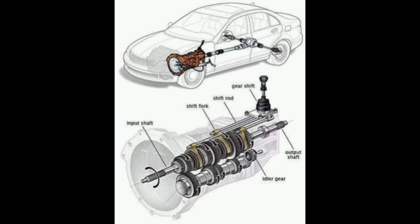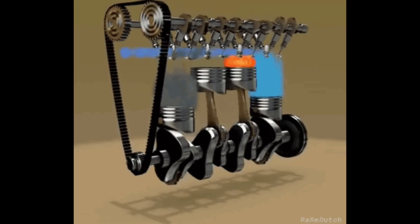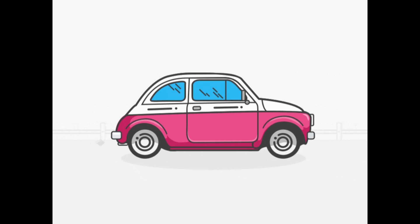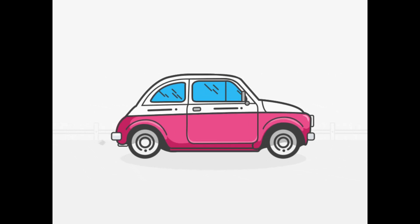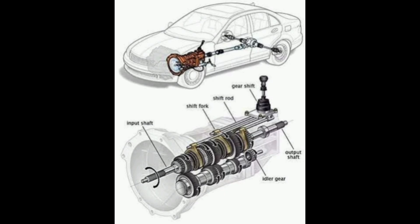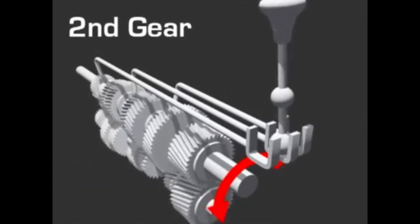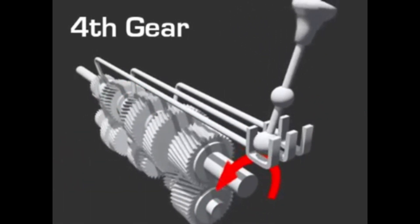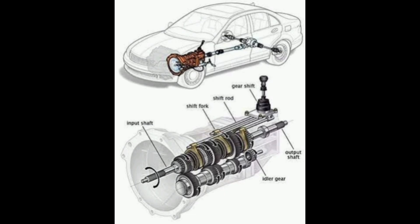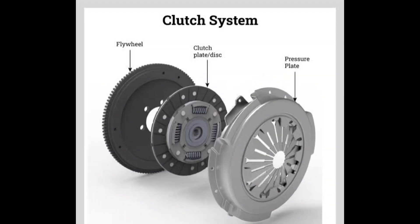The transmission system in an automobile serves as the mechanism for transferring the engine's power to the road wheels, propelling the vehicle forward. In this process, the engine generates power to drive the wheels, necessitating a connection between the engine and the transmission system. A seamless engagement and disengagement mechanism is crucial to prevent damage to the vehicle and ensure passenger comfort. In automobiles, a clutch is employed for precisely this purpose.